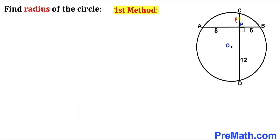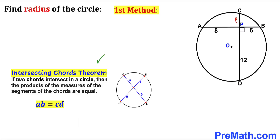Our first task is to calculate the value of this unknown side. Let's recall the intersecting chords theorem: if two chords intersect in a circle, then the product of the measures of the segments of the chords are equal. That is, A times B equals C times D, as you can see in this diagram.